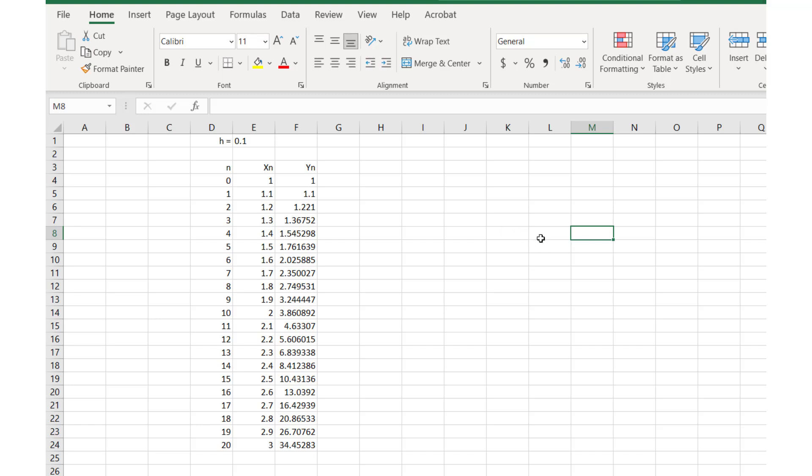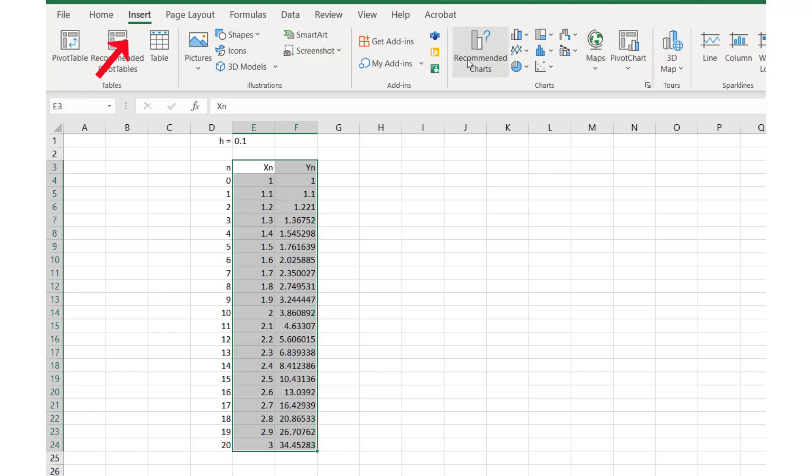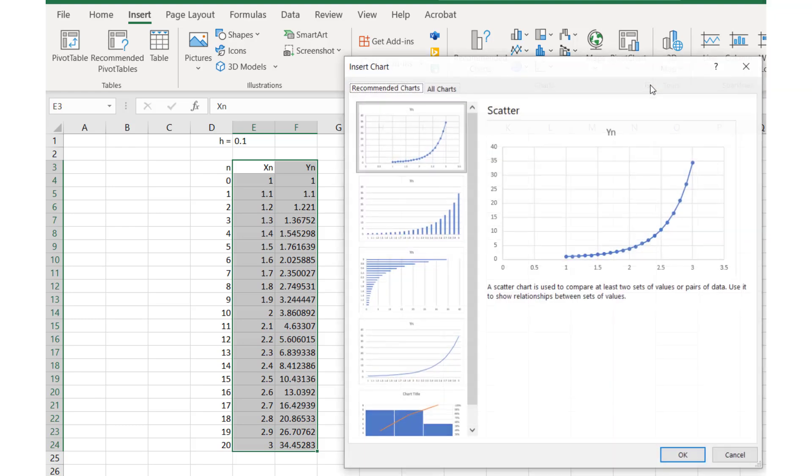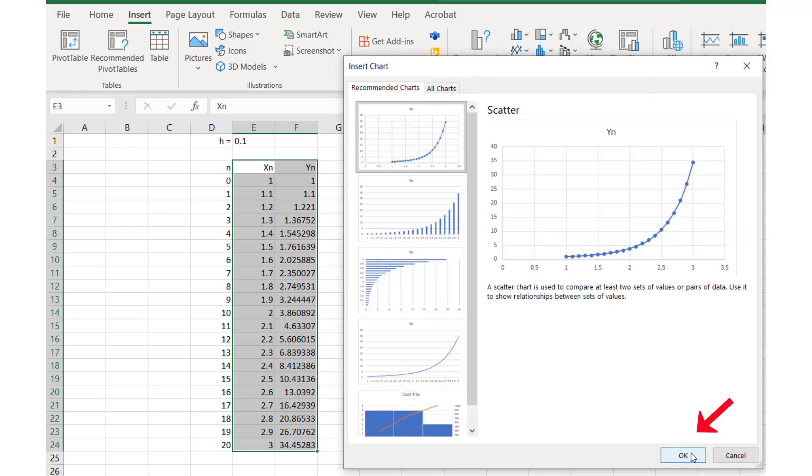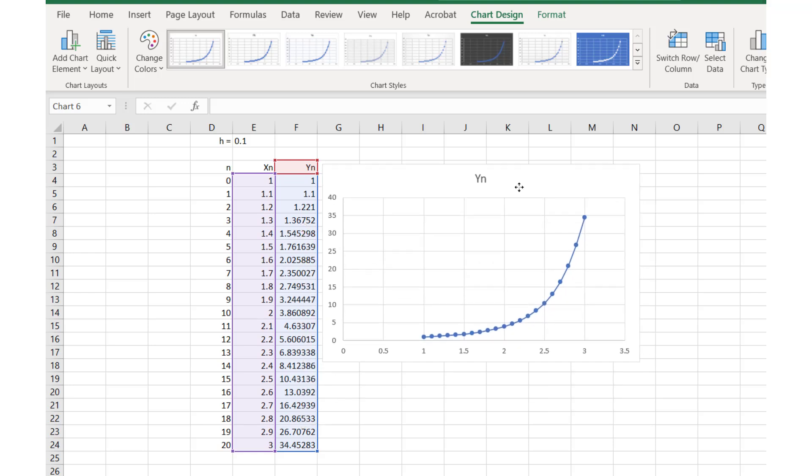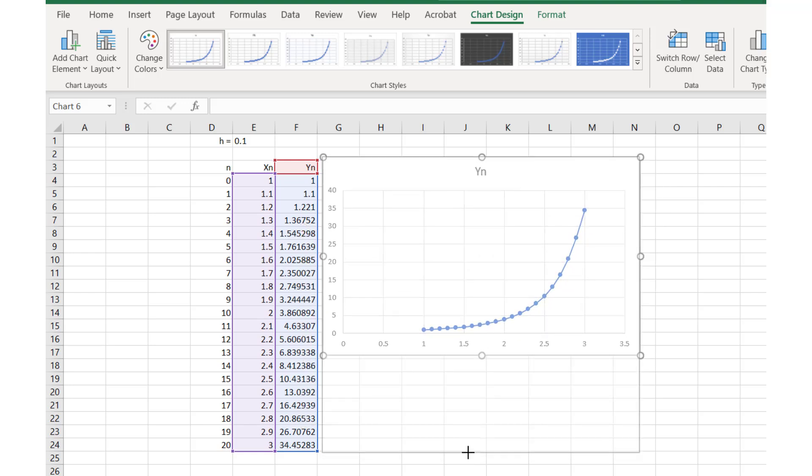Next, I am going back to h equals 0.1 and zooming out a bit, so you can see the menus at the top of the screen. We select the cells with the x and y values. Next we select the Insert menu and expand the options on Charts. I like this first one. We can resize the chart however we like and look at the points.